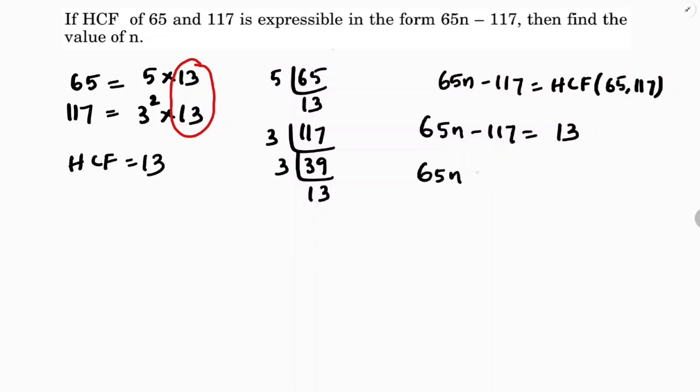65n equals 13 if we will transpose this towards right side plus 117. 65 times n is 130.